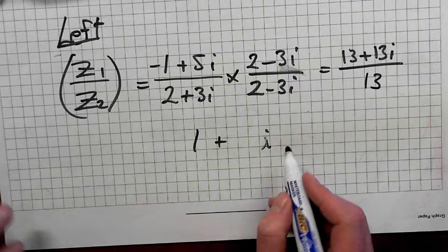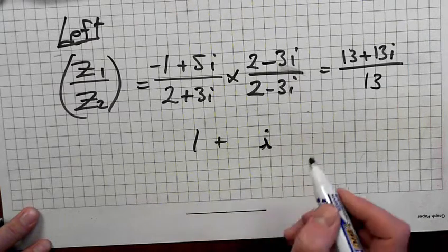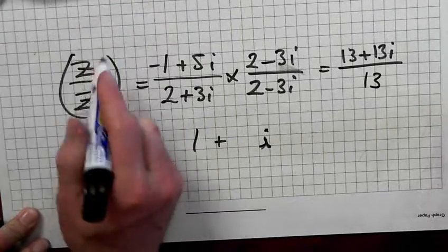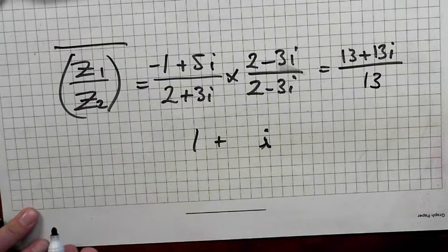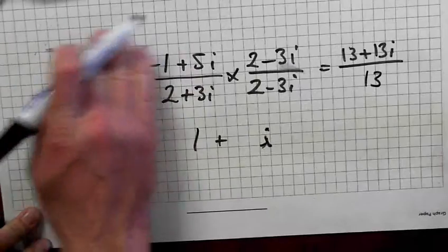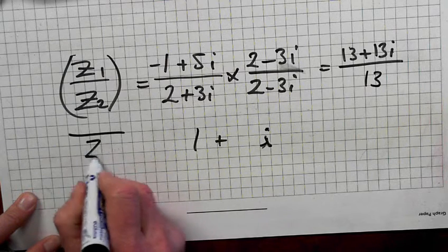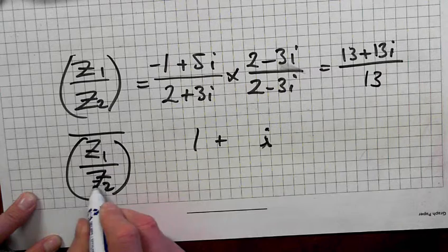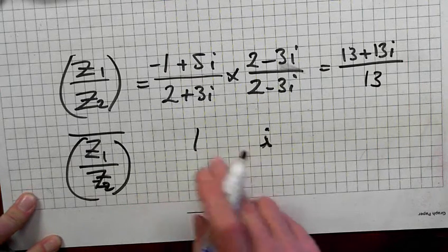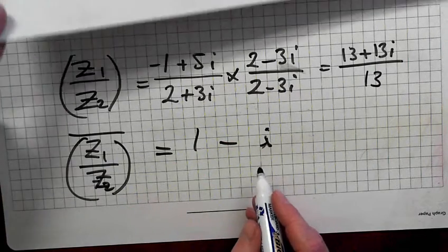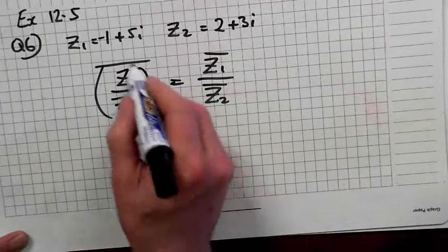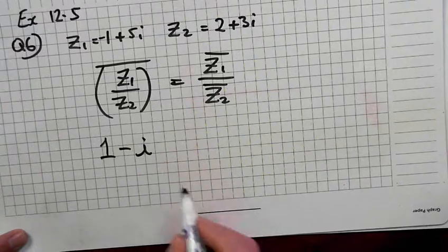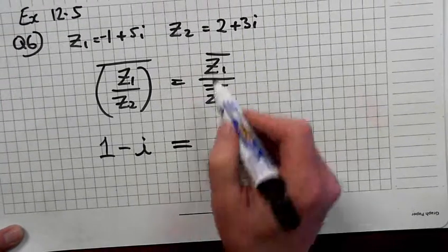Would you have to split it up? Yeah, you have to do it, because the next step is conjugate. What's the conjugate of that? 1 minus i. So that's what Z1 over Z2 conjugate is: 1 minus i.